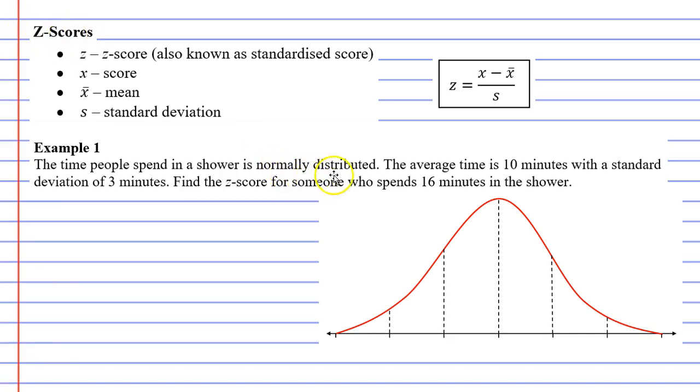Normally distributed means you get this bell curve. The average time is 10 minutes with a standard deviation of 3 minutes. So on average, people spend about 10 minutes in the shower. Let's write some notes: our mean is 10 minutes and our standard deviation is 3 minutes.